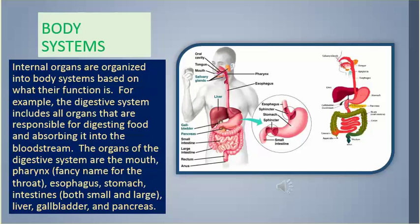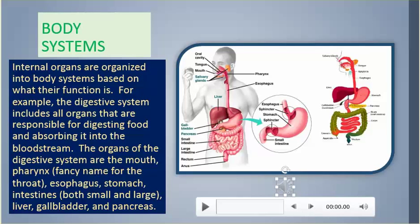Internal organs are organized into body systems based on their function. For example, the digestive system includes all organs responsible for digesting food and absorbing it into the bloodstream. The organs of the digestive system are the mouth, pharynx (the throat), esophagus, stomach, intestines (both small and large), liver, gallbladder, and pancreas.